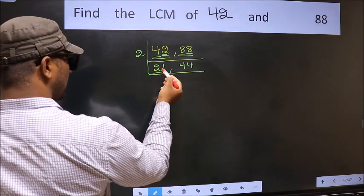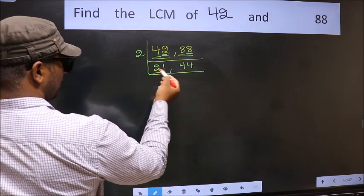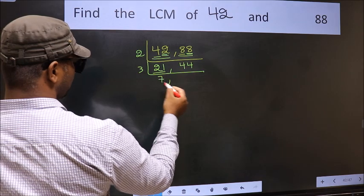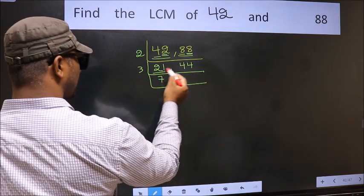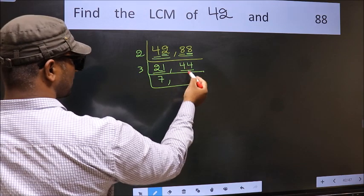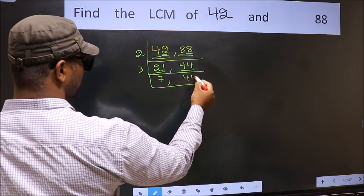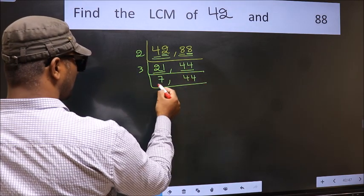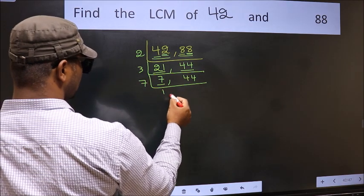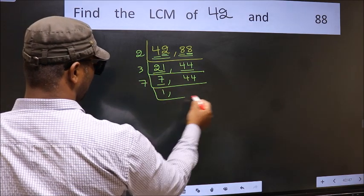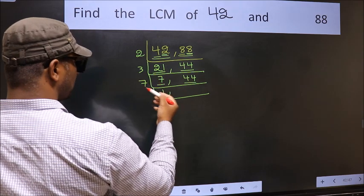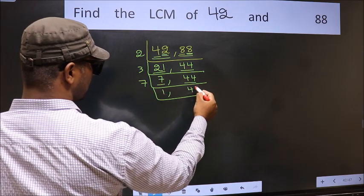Now here we have 21. 21 is 3 sevens — 3 times 7 is 21. The other number is 44, which is not divisible by 3, so we write it down as it is. Now here we have 7. 7 is a prime number, so 7 once is 7. The other number 44 is not divisible by 7, so we write it down as it is.